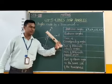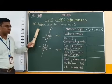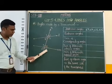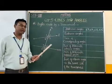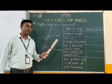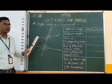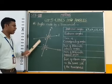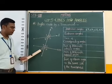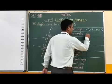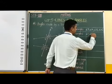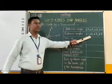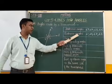Next, exterior angles. In this figure, angle 1, angle 2, angle 7 and angle 8 are in the exterior part of the figure. Therefore these angles are called exterior angles: angle 1, angle 2, angle 7 and angle 8.